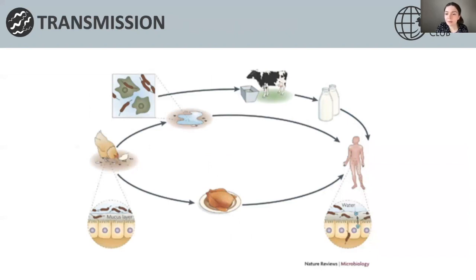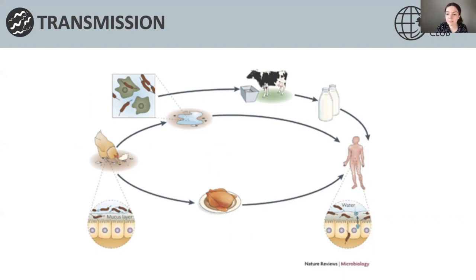In terms of transmission, Campylobacter is transmitted to humans by the faecal-oral route, predominantly through the consumption of contaminated food — usually poultry and chickens, but also other types of meat and unpasteurised milk. The source of infection can also be direct contact with infected animals, which often carry Campylobacter asymptomatically, as it is often present in the intestines of domestic and wild animals.